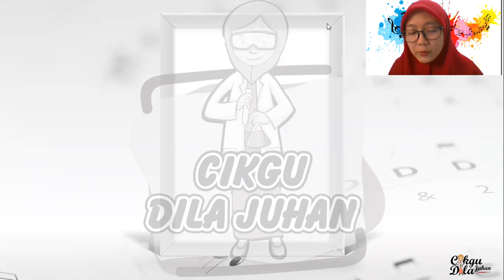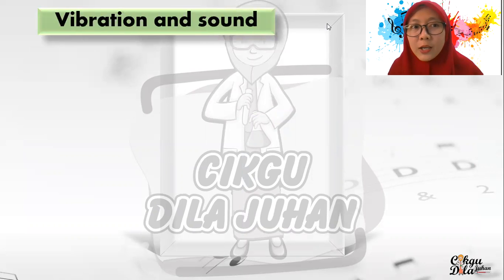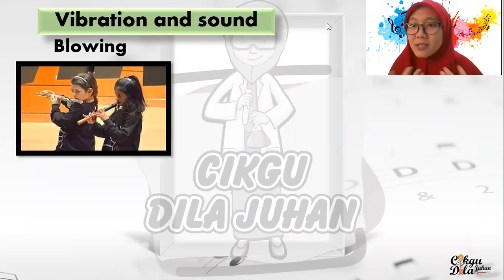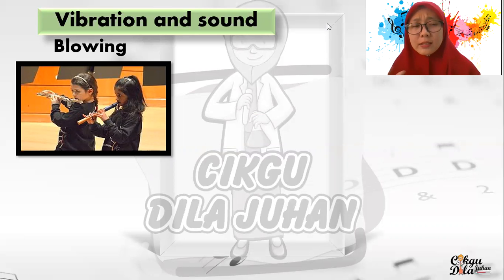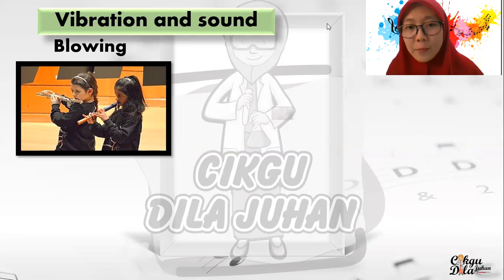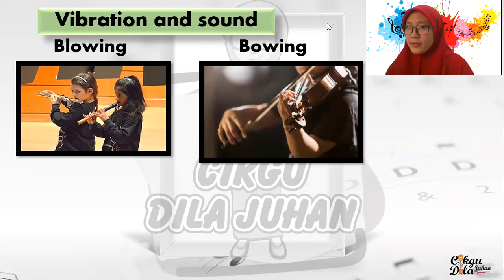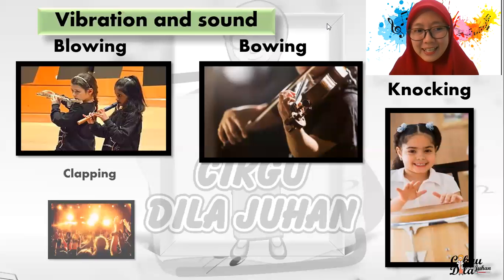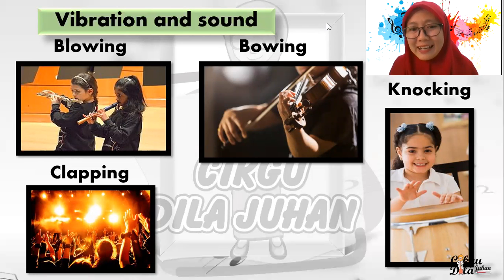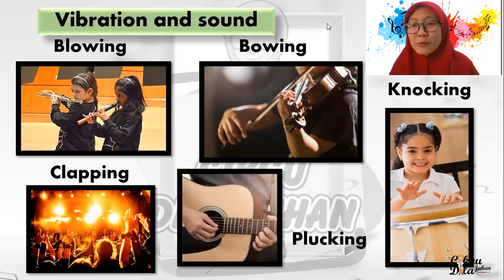Next, we move to vibrations and sound. How can sounds be produced? At the start of the lesson, I was clapping — that is how I was producing a sound. So how can sound be produced? The first way is blowing. And also knocking. And clapping. And the last one is plucking — like a guitar, that is also plucking.